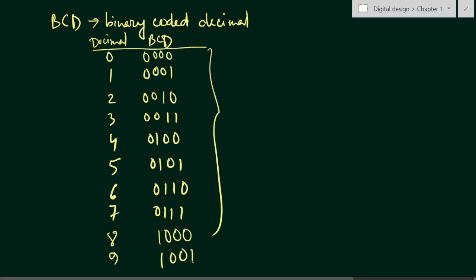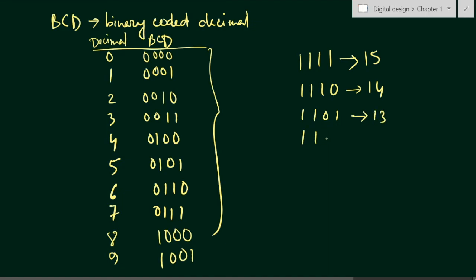The maximum value using 4 binary digits is 1111, which equals 15. Then 1110 is 14, 1101 is 13, 1100 is 12, 1011 is 11, and 1010 is 10. These values from 10 to 15 are important — I'll explain why now.